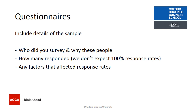When it comes to questionnaires, you need to include details of the sample: who did you survey and why was it appropriate to survey those people? How many people responded? We don't expect 100% response rates — in fact, participation in a survey should be voluntary. You might also want to reflect on any factors that have affected response rates, and that's included within the information gathering section.